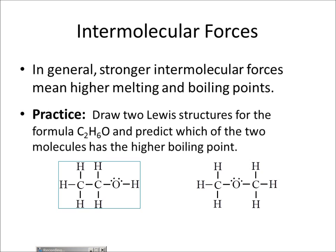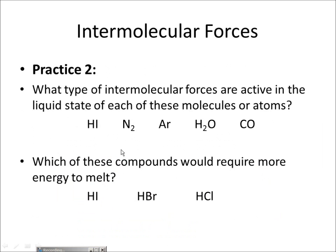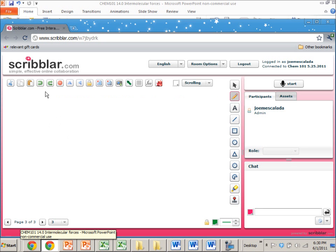Dimethyl ether has no OH bond, so it can't do any hydrogen bonding and is not as attracted to other dimethyl ether molecules as ethanol is to other ethanol molecules. From Lewis structures alone you can tell things about physical properties. If asked how many of these molecules have London dispersion forces, the answer is all of them — one, two, three, four, five. All five.